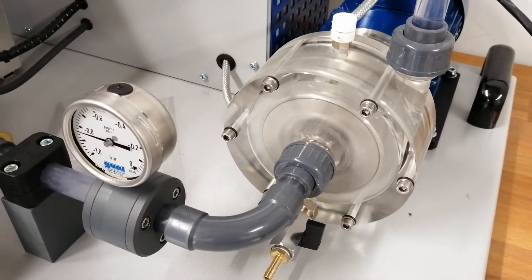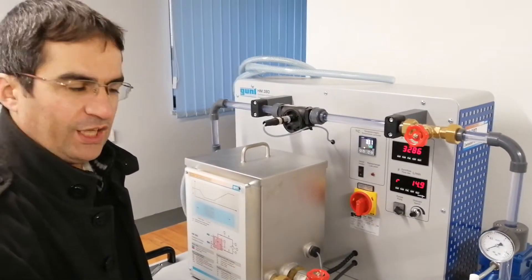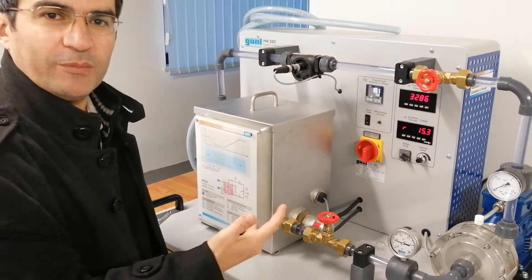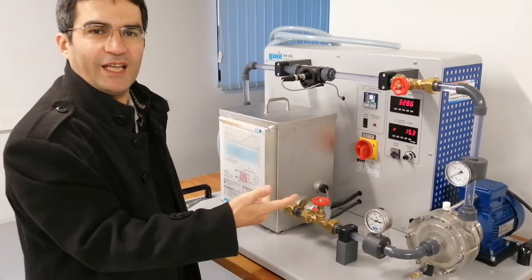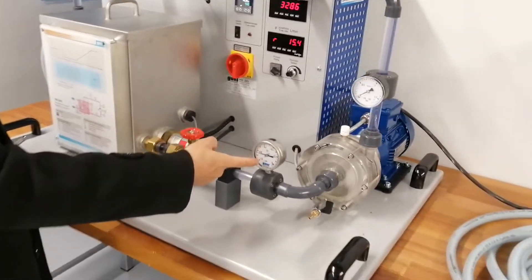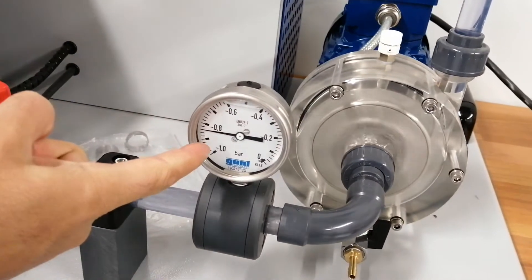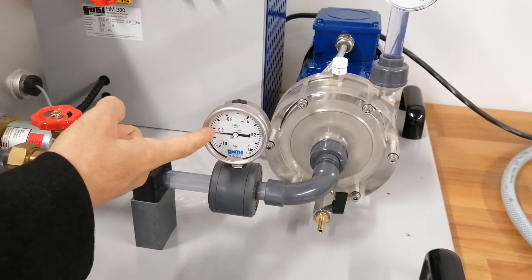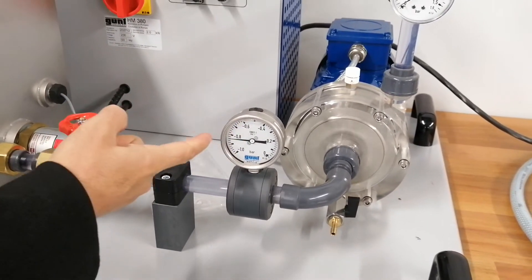Those bubbles are very dangerous for structure. Especially in turbines and also pumps, metallic materials. It can make corrosion over time. And then also you can see the input pressure. There is a suction, as you see. Zero, nearly minus 0.8, as you see.